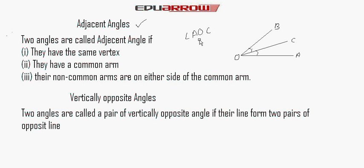Two angles are called adjacent if they have the same vertex, they have a common arm — here OC is the common arm — and their non-common arms are on either side of the common arm.